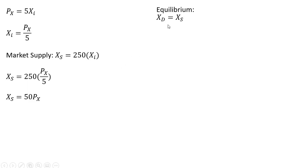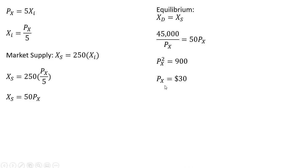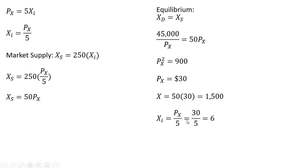Now let's get to equilibrium. We set quantity demanded equal to quantity supplied, make our substitutions, and solve for the price of good X. Taking the square root of both sides, the equilibrium price is $30. For the equilibrium quantity, we plug $30 back into either the market supply or market demand curve. Plugging it into the market supply curve, we get back 1,500 — so equilibrium quantity is 1,500 units of good X. The individual firm, plugging $30 into the individual firm's supply curve, will supply 6 units. And plugging $30 into the individual consumer's demand curve — 50 divided by the price of good X — the individual consumer will buy 1.67 units.